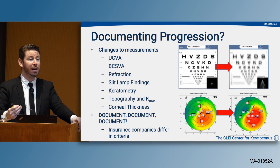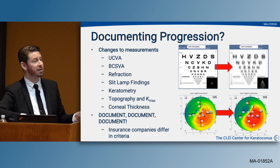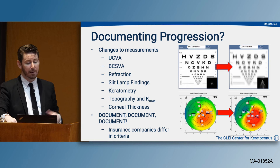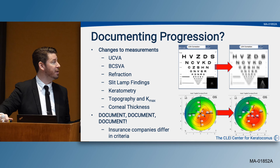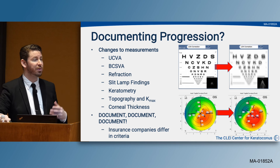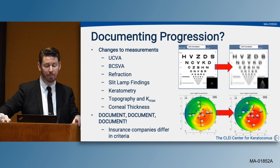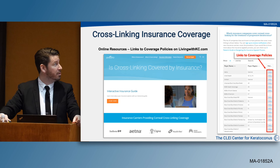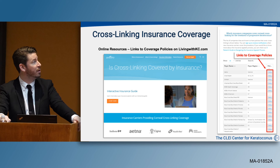When documenting progression, we look for changes in uncorrected visual acuity, best-corrected spectacle visual acuity, refraction, slit lamp findings, keratometry, topographies and K-max, and corneal thickness. It's really important to document these changes because insurance companies differ in criteria they use to document progression. Ovidro and Glaukos have worked diligently to provide a resource for both patients and doctors to review the various commercial plans available.